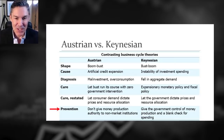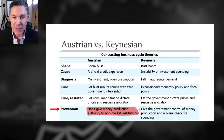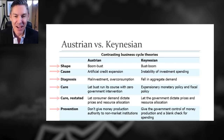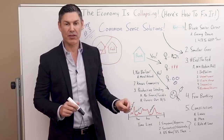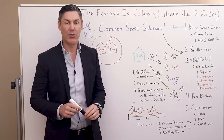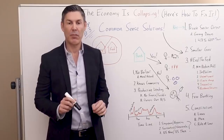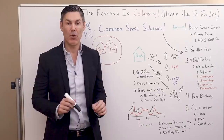Prevention, according to Austrians: don't give money production authority to non-market institutions — let's trust the free market. But the Keynesians: give the government control of money production and a blank check for spending. So just going over these six contrasting views — should we call it Austrian economics, or should we just simply call it common sense? Those are the no-brainer solutions. I think if I would have asked any of you how to improve the economy, you would have said to reduce the size of government and the role of the Federal Reserve. But there are some things most people really haven't thought of which I think would really move the needle.